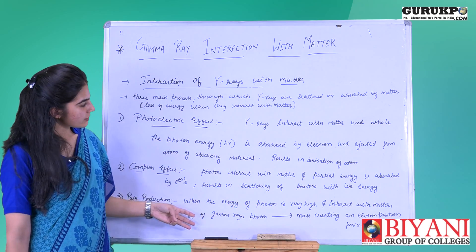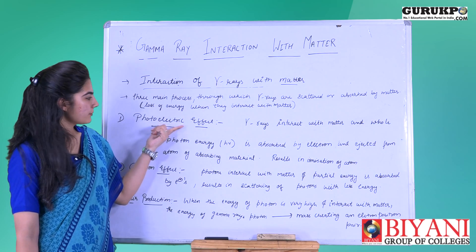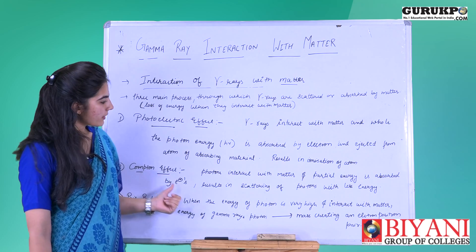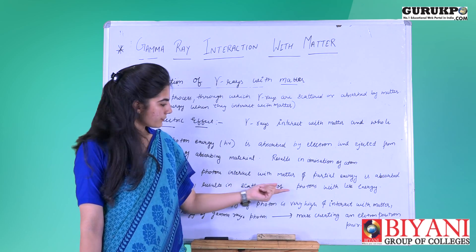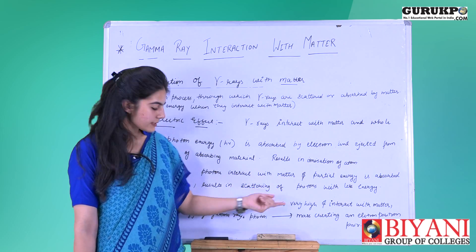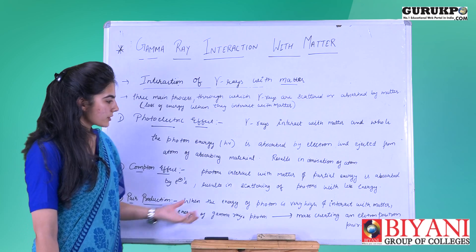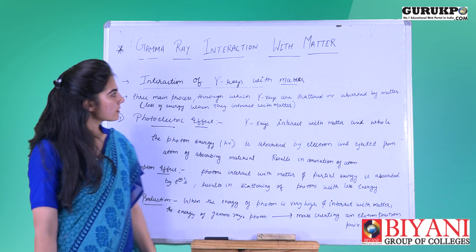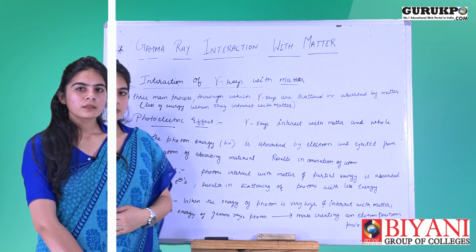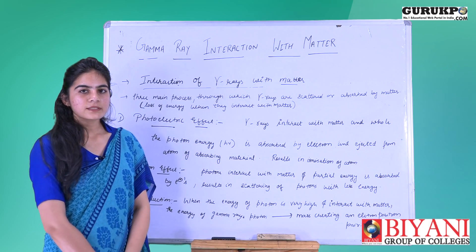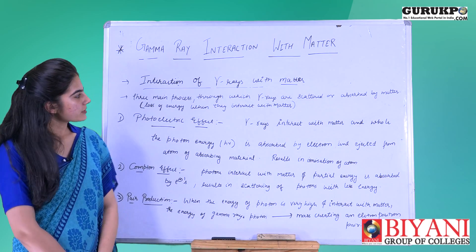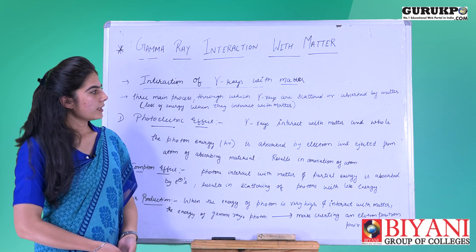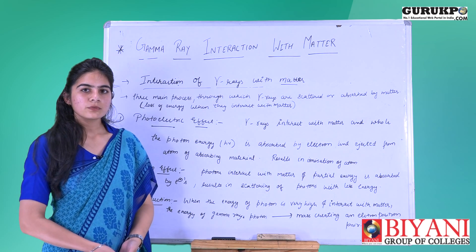So we have three processes: in the photoelectric effect, ionization of atoms takes place; in the Compton effect, scattering of photons takes place; and in pair production, an electron-positron pair is created. That is all for gamma ray interaction. Thanks for listening and watching this video. Hope this will be helpful to you for further study about gamma rays.